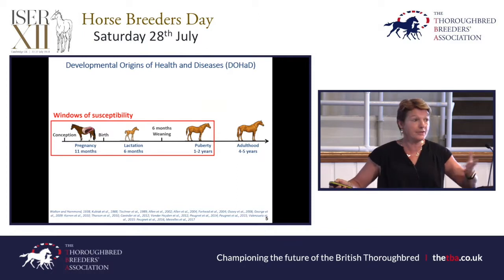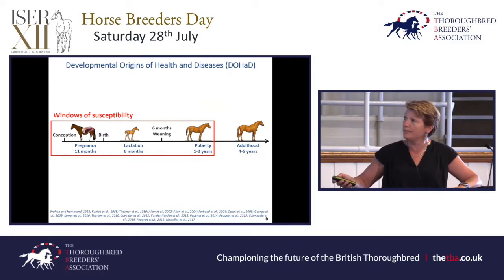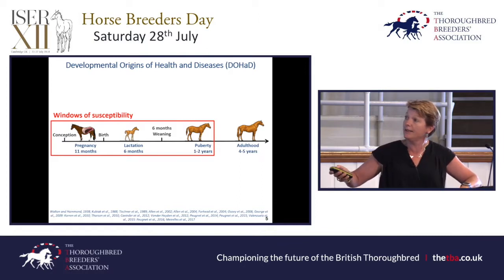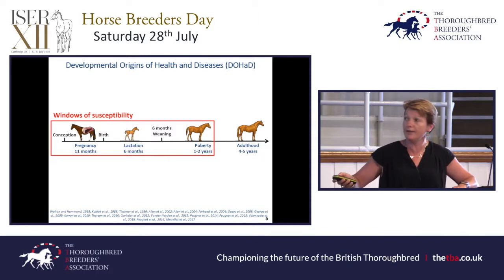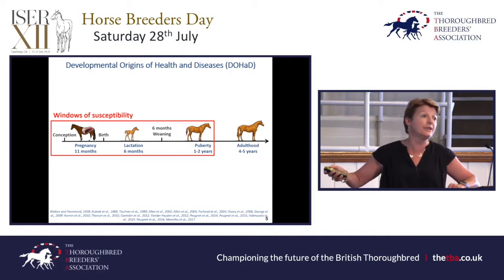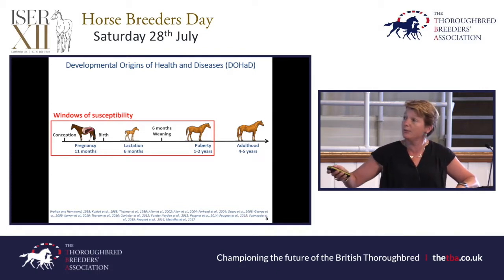These epigenetic marks can actually go back and forth. However, there are windows of susceptibility — times when they are set on the genes. This happens mainly in early life during pregnancy, and also during lactation, though that is much less known. Puberty is probably also a window of susceptibility.